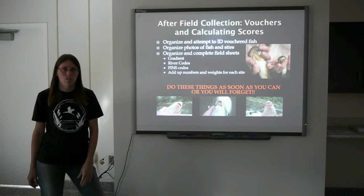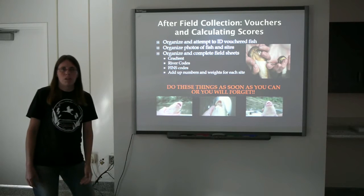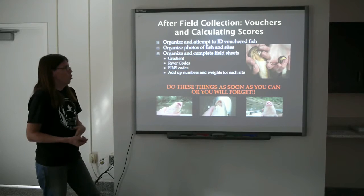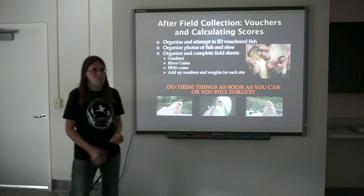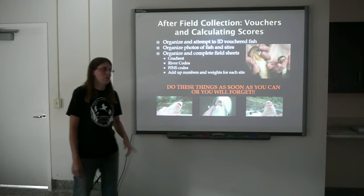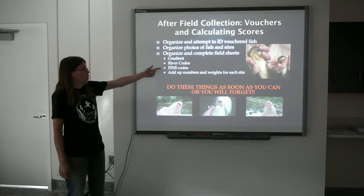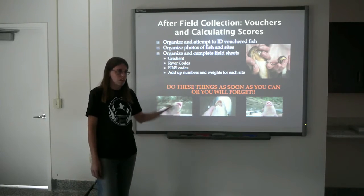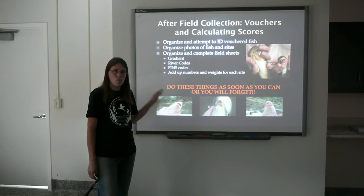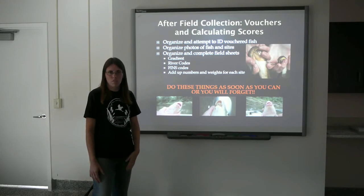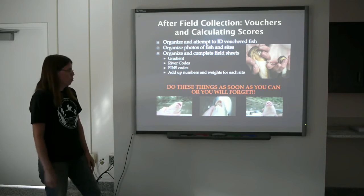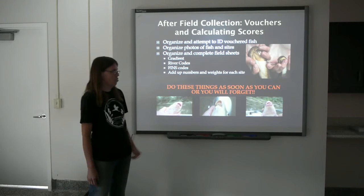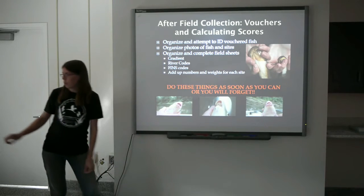Organize your photos of fish and sites — make sure you're recording the date and whatever site information is important. Organize and complete your field sheets. There are some things you might not know when you're in the field: gradient, river codes, FINS codes — add up all your numbers and weights for each site. It's really good to do this as soon as you can when you get back. If you wait until the end of the field season, there's probably going to be something you've forgotten, and if you record it as soon as you get back, your data will be a lot better.